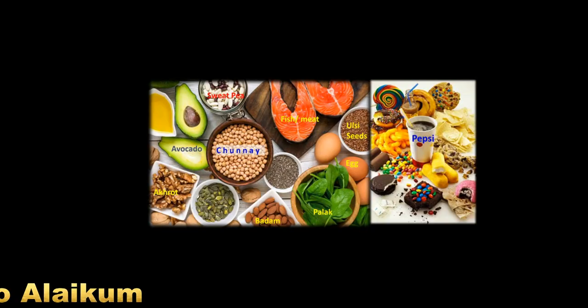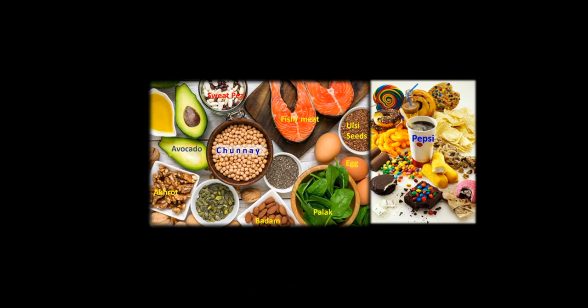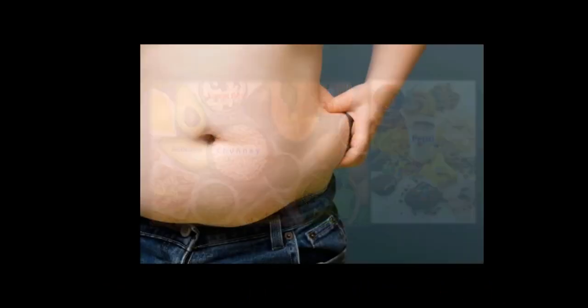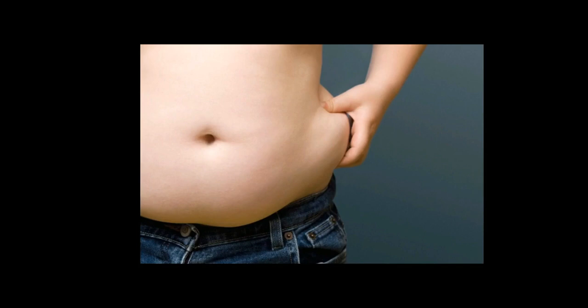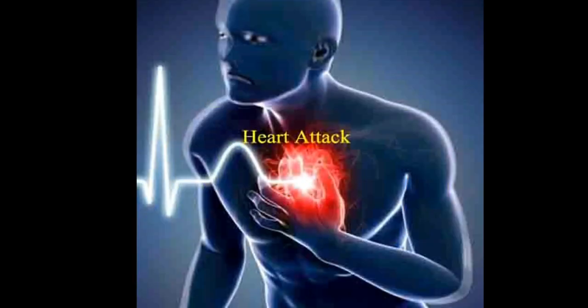Assalamu alaikum dear students. We have already covered lipids and fats — good lipids, bad lipids, good fats, bad fats, diets — and if we are taking excess lipids, what will happen to our body. These fats are stored in adipose cells, known as adipocytes. We covered important lipid functions in previous lectures. If we take excessive fats in our diet, it will lead to disorders like heart attack, diabetes, or obesity.